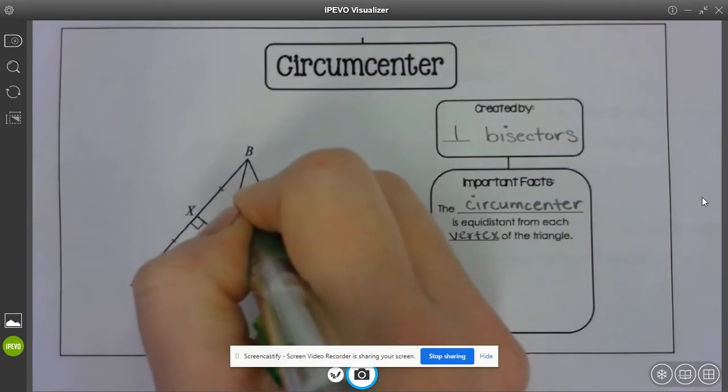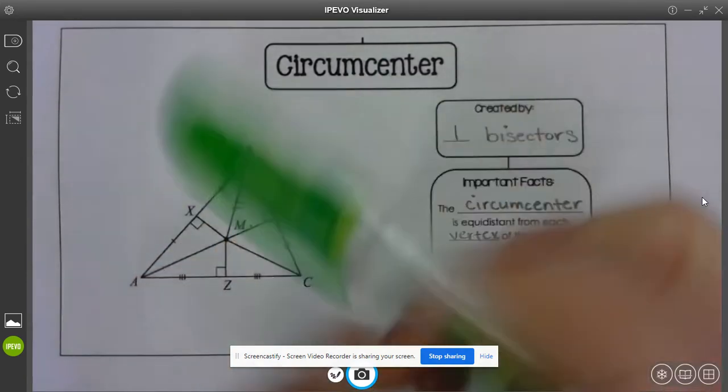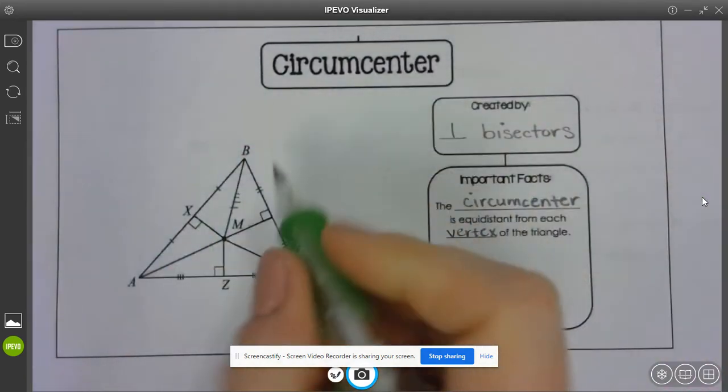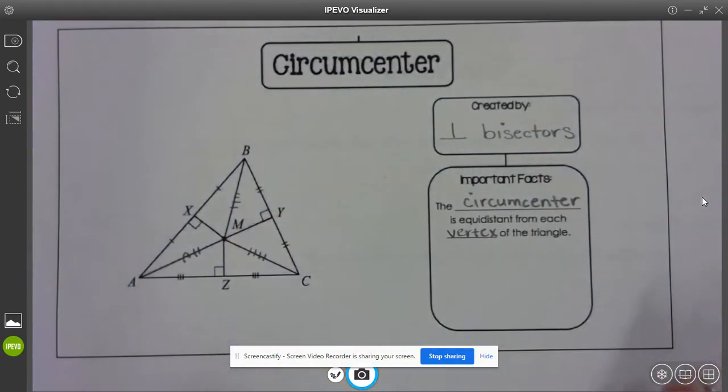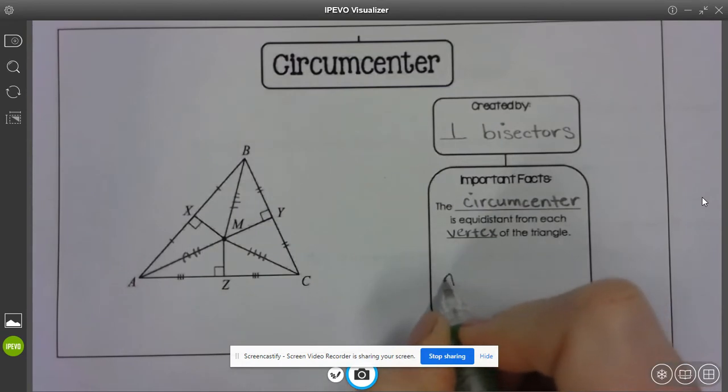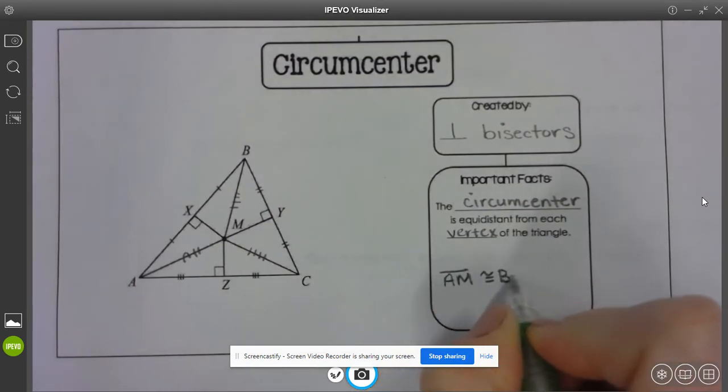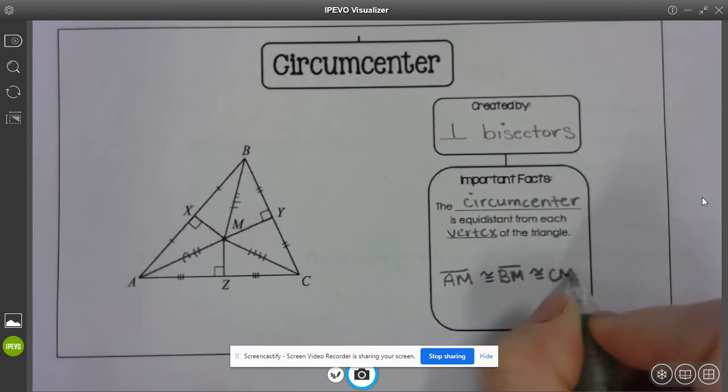So I know that AM is congruent to BM, which is congruent to CM.